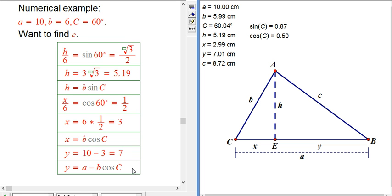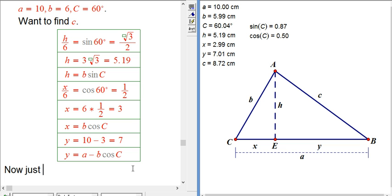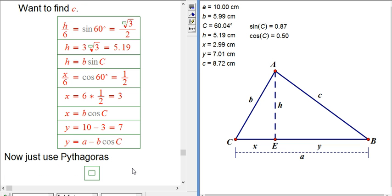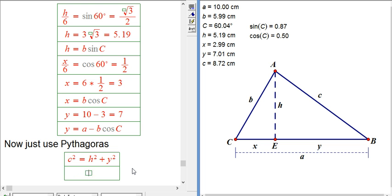Now, just use Pythagoras. c squared is going to be h squared plus y squared. In this case, that's pretty nice.